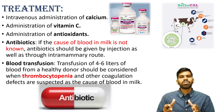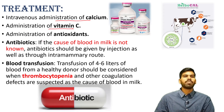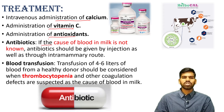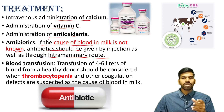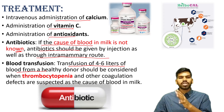What are the treatments for Hemolactia? Some treatments include intravenous administration of calcium, administration of vitamin C, administration of antioxidants, and if the cause of blood in milk is not known, antibiotics should be given by injection as well as through the intramammary route. For blood transfusion: when thrombocytopenia is the cause, transfusion of 4 to 6 liters of blood from a healthy donor should be considered.